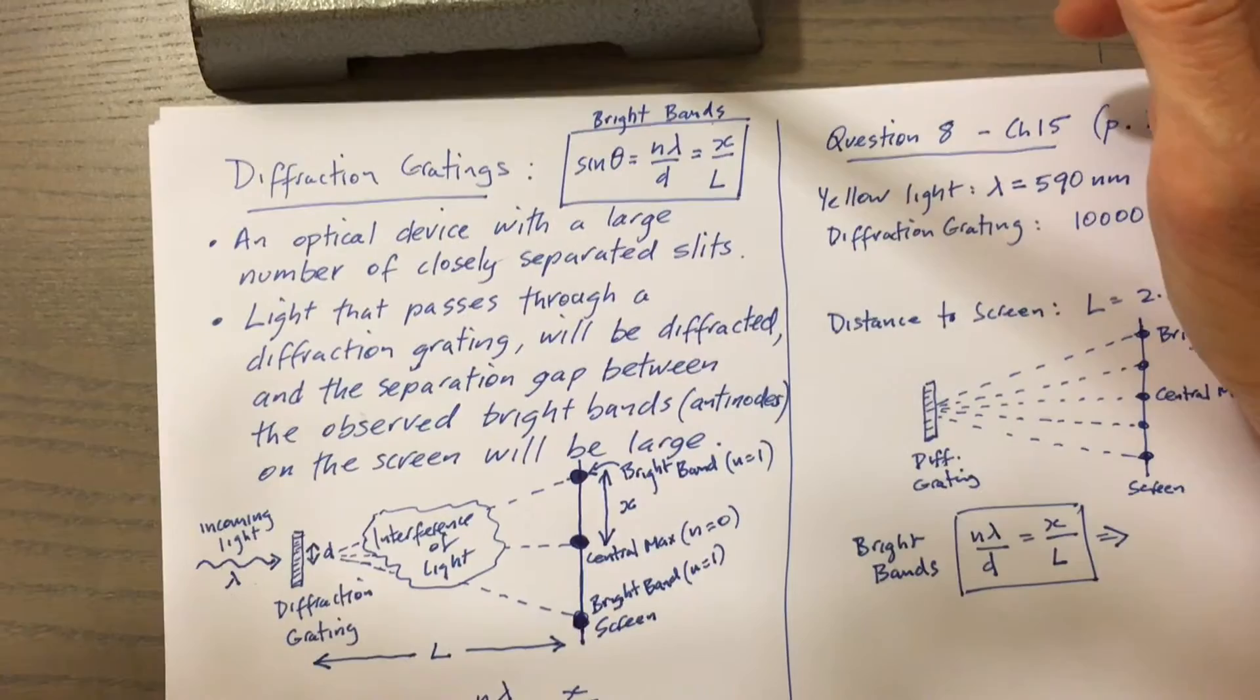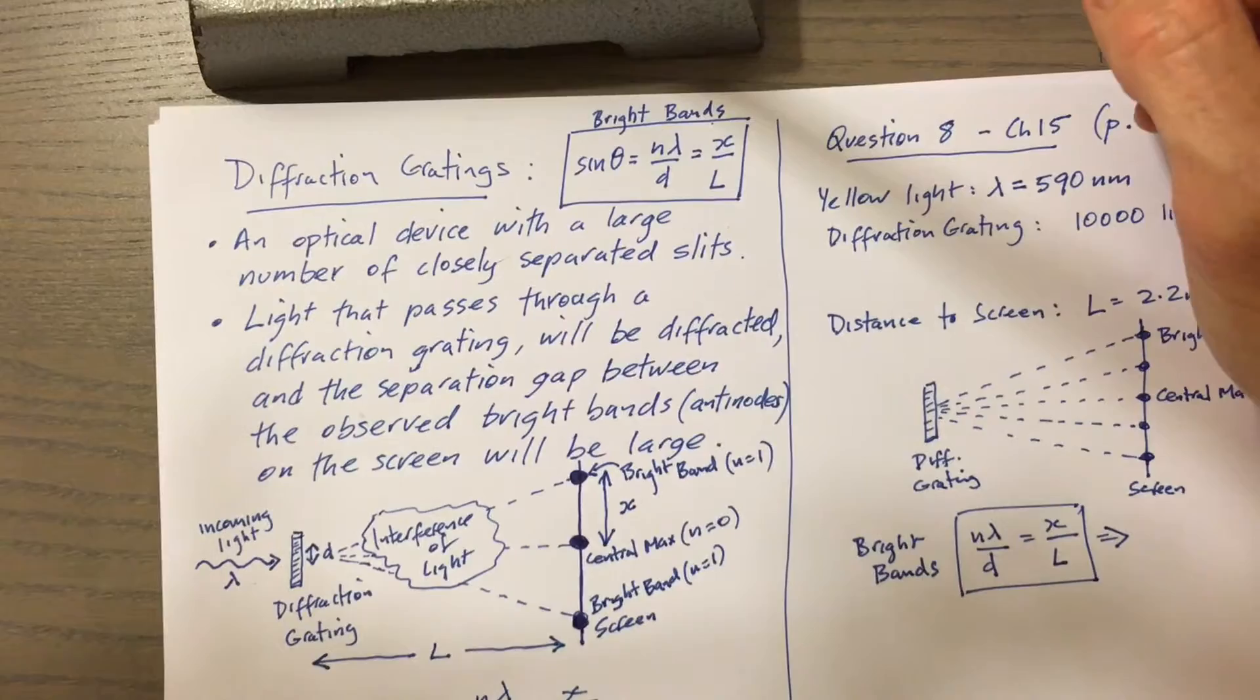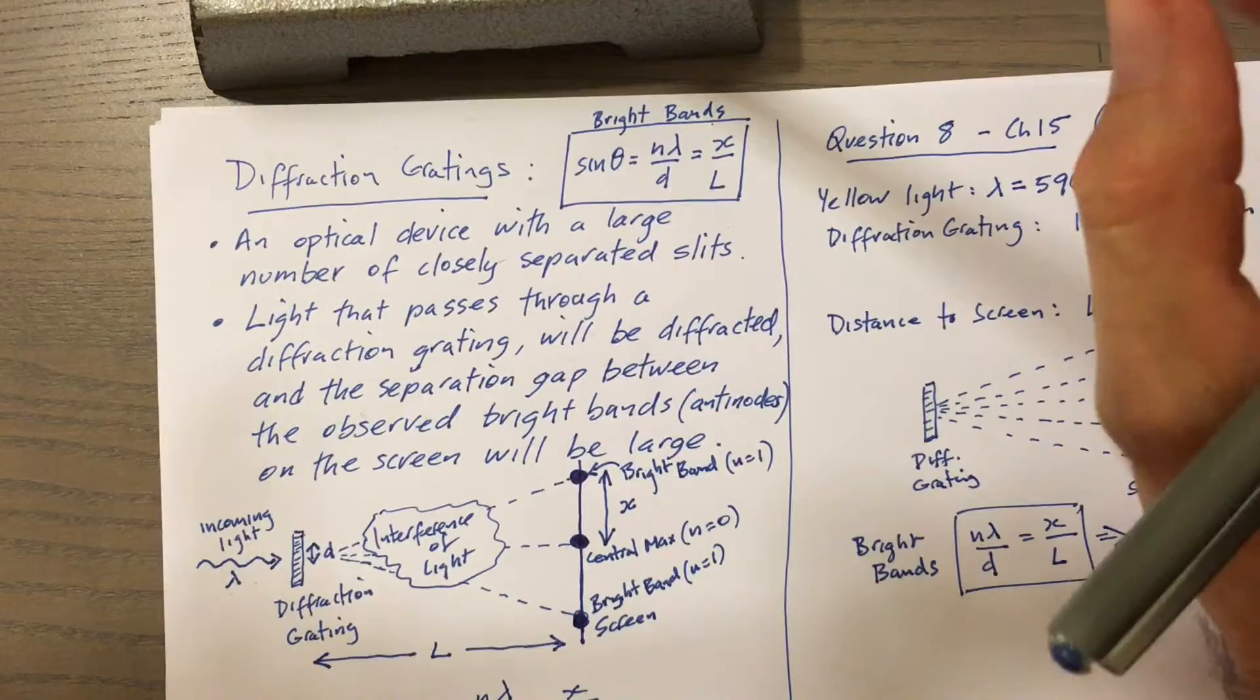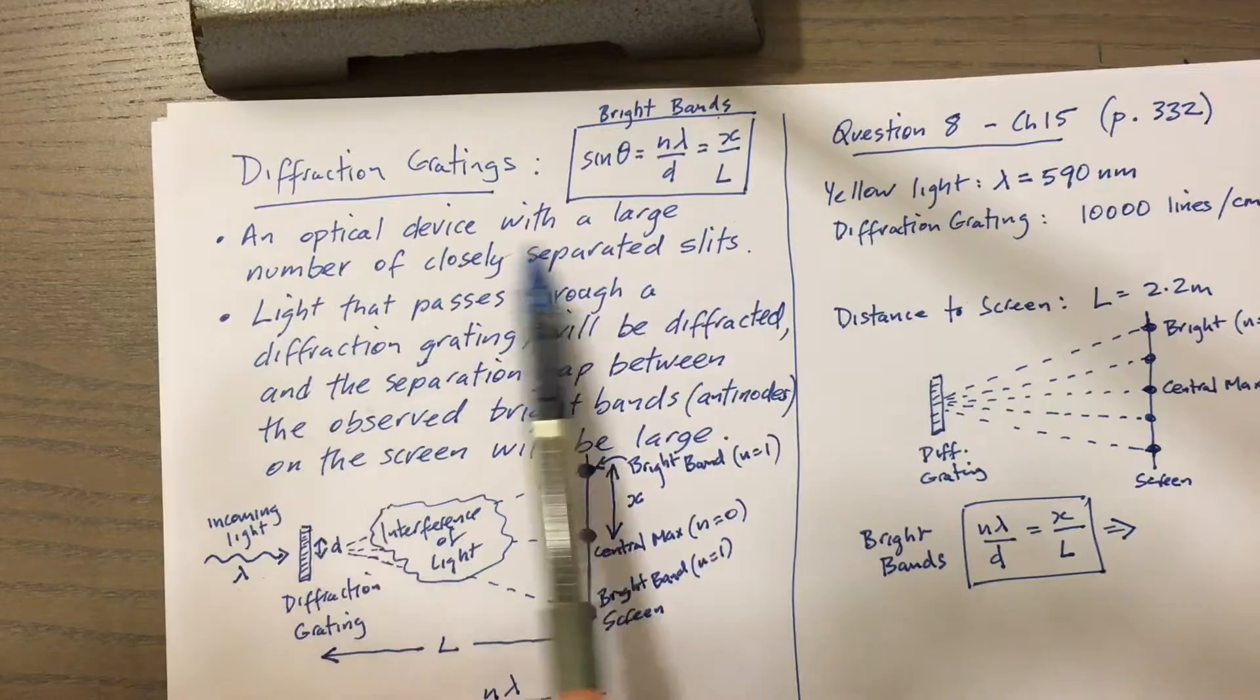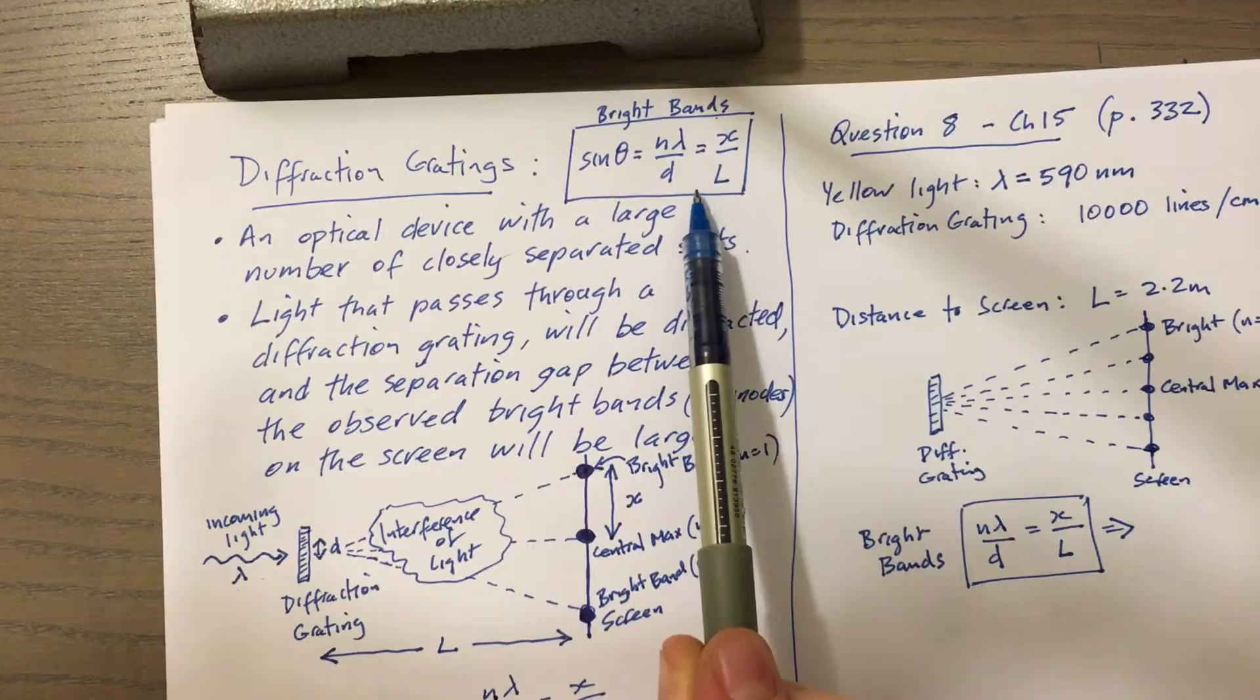Today we're going to look at diffraction gratings. Diffraction gratings are essentially an extension of the double slit. So instead of two slits we have multiple, maybe 10,000, but really close together. I've just written a definition here: diffraction grading is an optical device with a large number of closely separated slits.